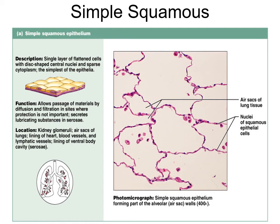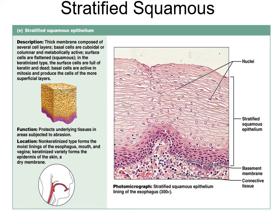Simple squamous also lines all your blood vessels, the inside of your heart, and all lymph vessels - specialized in lymph to overlap and open like a doggy door when the pressure outside is high. It lines the ventral body cavity as the serosa.